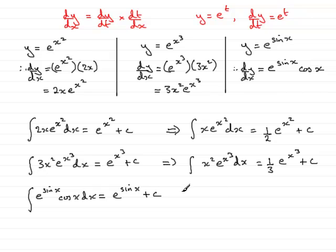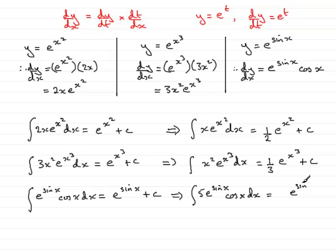And what about this one: the integral of 5 e to the sine x times cos x with respect to x? It would have come from differentiating e to the sine x, which gives e to the sine x times cos x. I want the factor of 5, so I put the 5 in: 5 e to the sine x plus c.